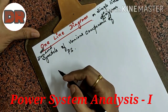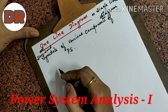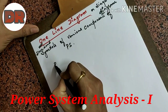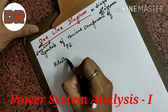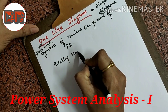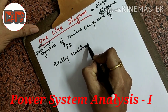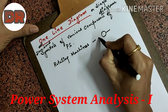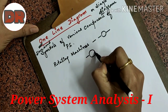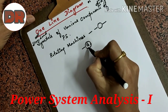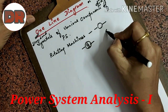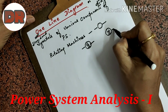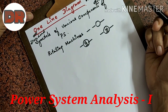The most important components of power systems are rotating machines. Rotating machines are represented with a circle. If it is a generator, we represent it with G and an alternating symbol. If it is a motor, we represent M with the alternating symbol. This is for rotating machines.